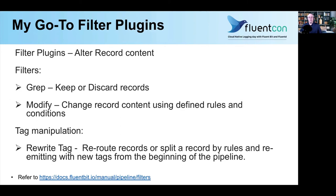The filter plugins I use quite often are grep — mainly for discarding records I don't want ingested — and modify, which I commonly use to drop keys prior to ingestion. There's an additional one for tag manipulation called rewrite tag. Tagging in FluentBit is one of the key features — you can reroute records through the pipeline by changing tags, or split a record using rules, assign a new tag, and when you re-emit it, it restarts at the beginning of the pipeline.